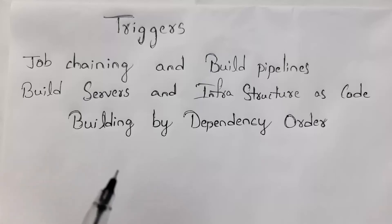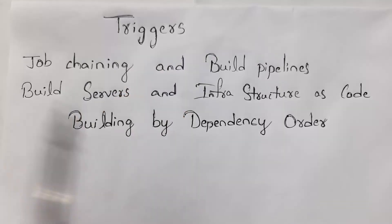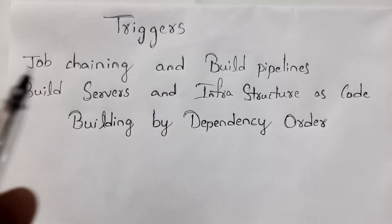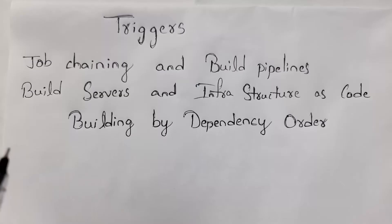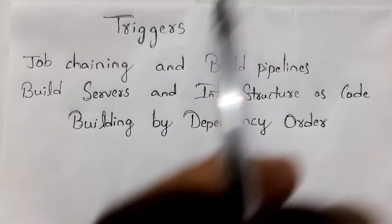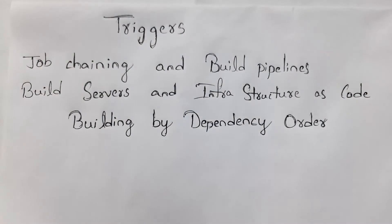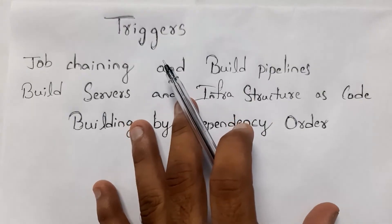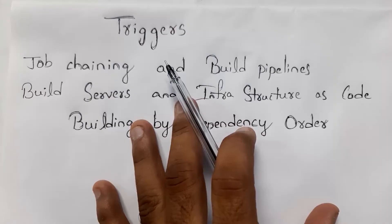Hi guys, welcome to my channel. In this video, I will be covering what are triggers, what is job chaining and build pipelines, what are build servers and infrastructure as code, and also I will explain building by dependency order. I will explain these four topics in detail. I have uploaded complete DevOps tutorials and will provide that link in the description. If you are watching this video for the first time, don't forget to like, share, and subscribe to my channel. Let's get started.